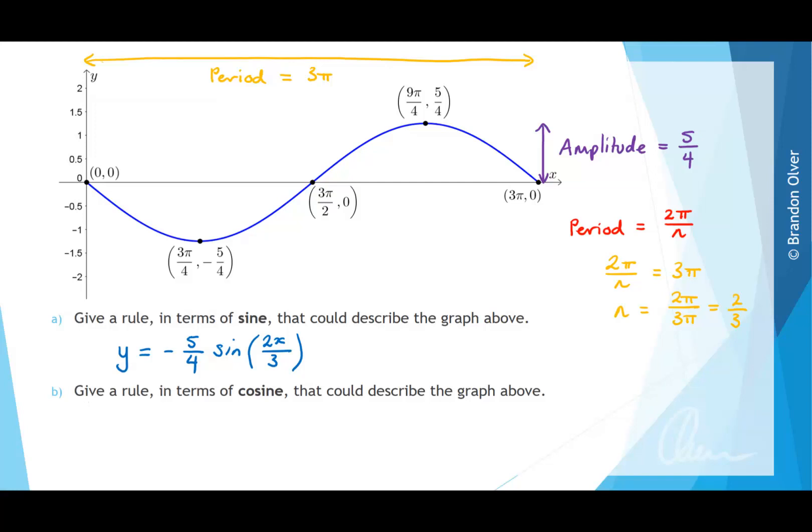For part b, we want to give a rule in terms of cosine that could be used to describe the same graph. So cosine and sine are complementary, so it means that we should just be able to translate the cosine graph so that we get the same curve.